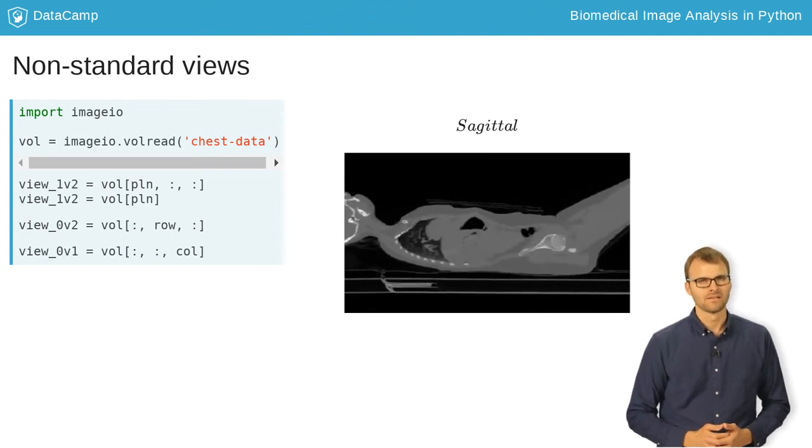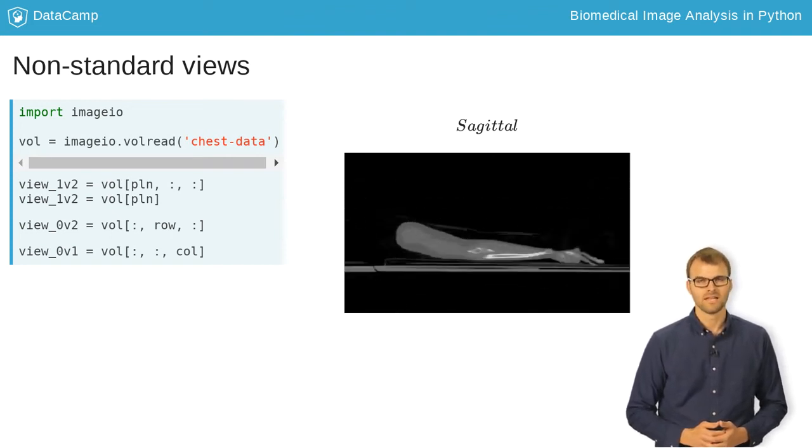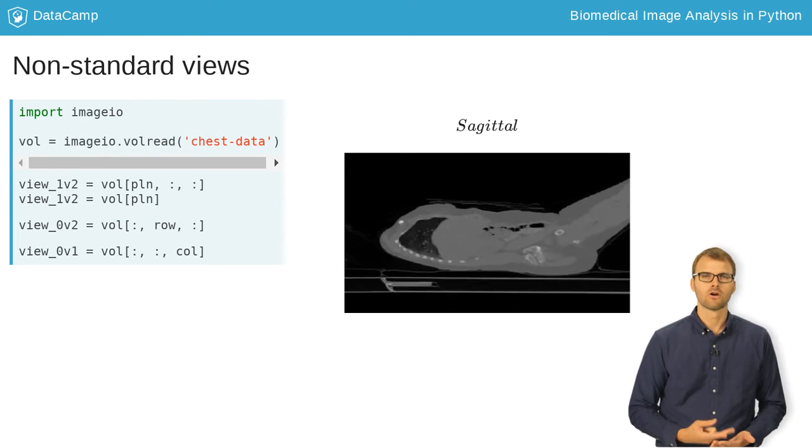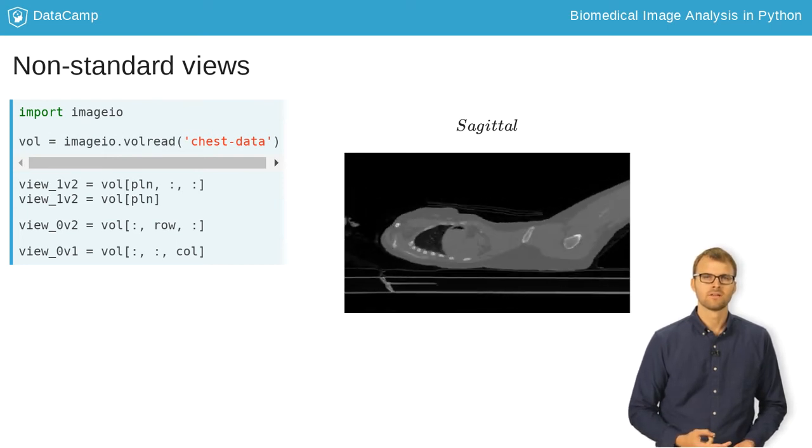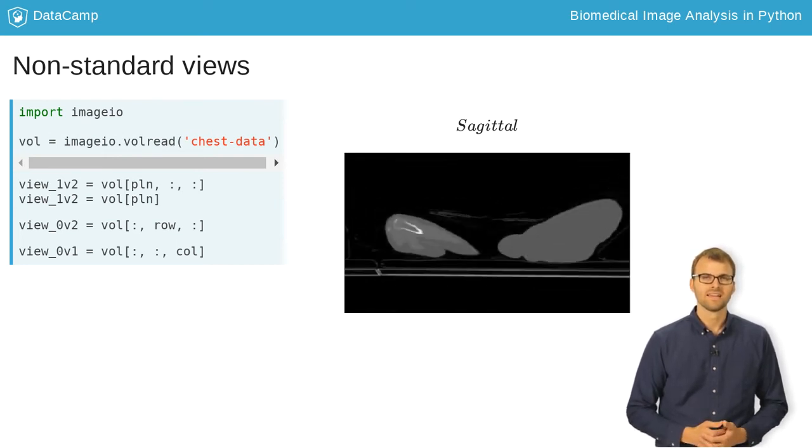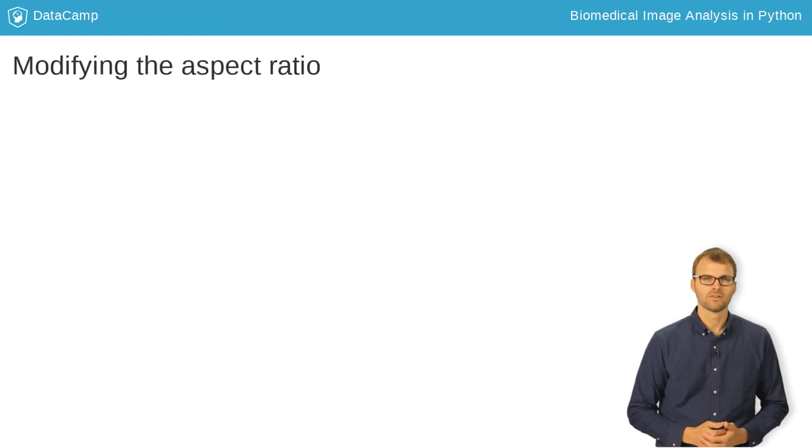When looking at human anatomy, these different views have special names: the axial, coronal, and sagittal planes. Knowing in which plane a dataset is stacked can help you navigate more efficiently.